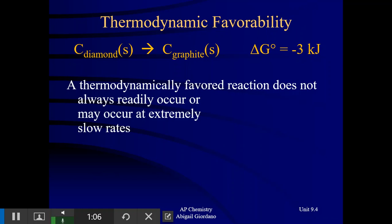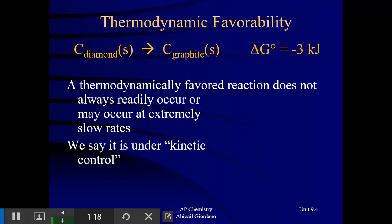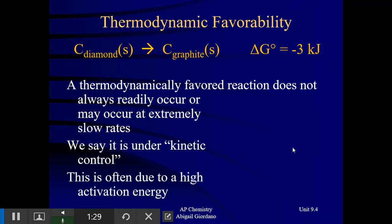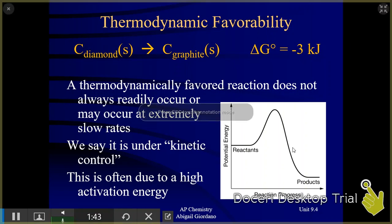It could be something like this reaction where diamond changes into its graphite form — it's going to happen at a very, very slow rate. And the term that we use when this occurs, when you have something that is favored but is very, very slow or almost appears to not occur at all, we say that it is under kinetic control. And if you will remember back to unit 5, the kinetics unit, reactions that are very slow are often slow because they have a high activation energy.